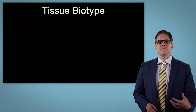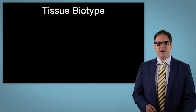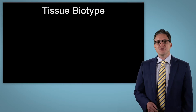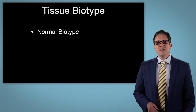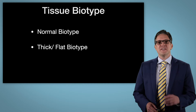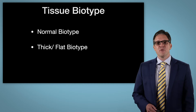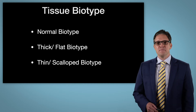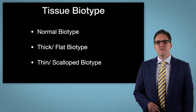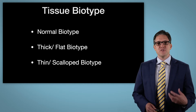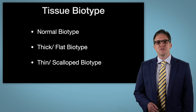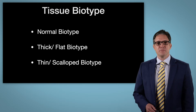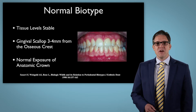We're going to talk about different types of tissue biotype. First, we'll discuss normal tissue biotype, then thick or flat tissue biotype, and finally thin scalloped biotype. These biotypes really impact our treatment plan, our diagnosis, and our surgical and prosthetic approaches.